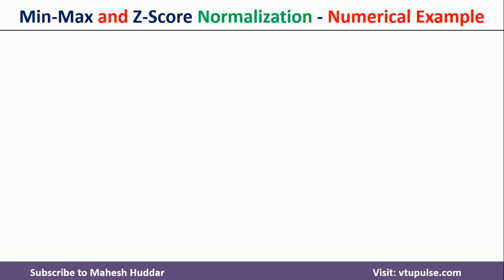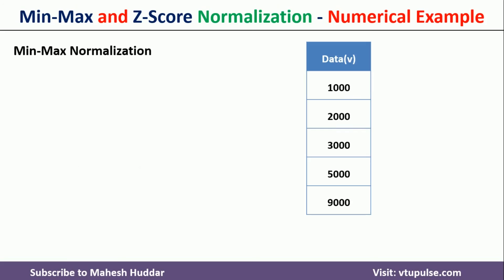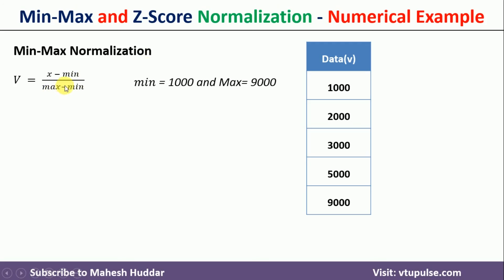First we will try to understand minmax normalization. This is the data given to us. The minimum value is 1000 and the maximum value is 9000. The new value, after applying minmax normalization, will be called v. The formula is: x minus min, divided by max minus min. We will go on putting these values — we know min, we know max — and we put x as 1000, 2000, and so on.